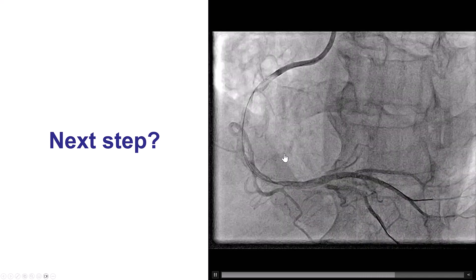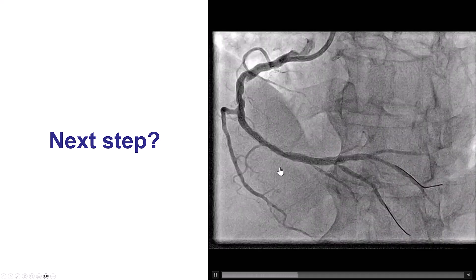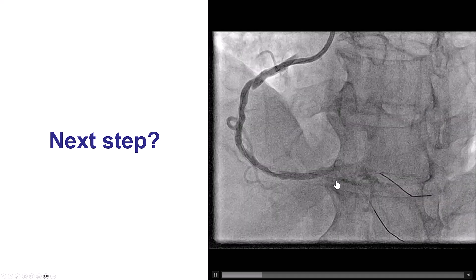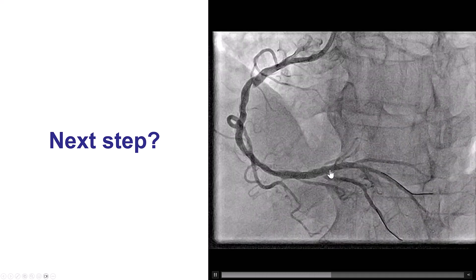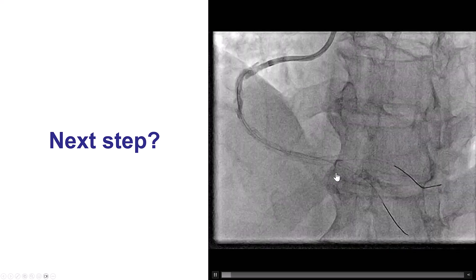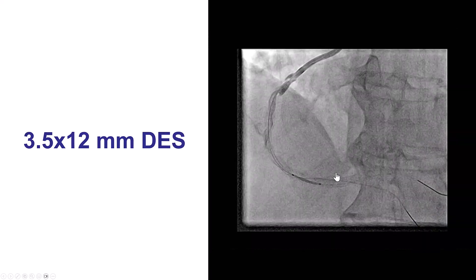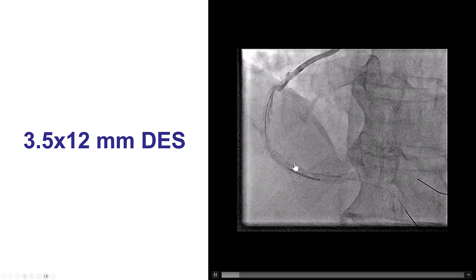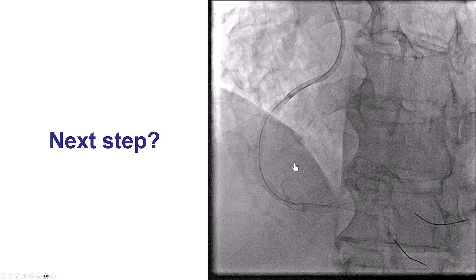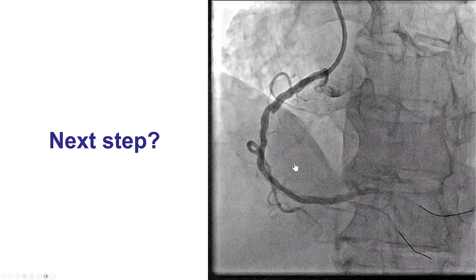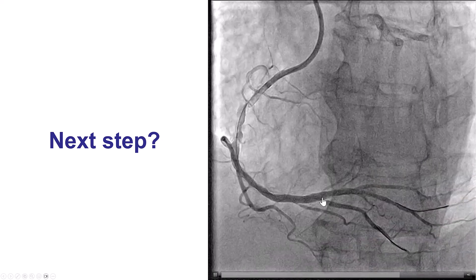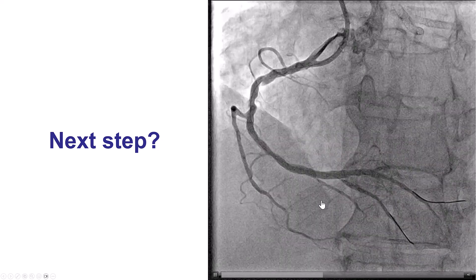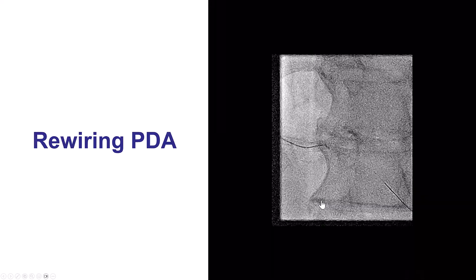There was an area of haziness proximal to the stent, and unfortunately we now have pinching of the posterior descending artery. So we covered the proximal area with another drug-eluting stent. But we still had a significant stenosis at the ostium of the PDA that we thought required treatment.